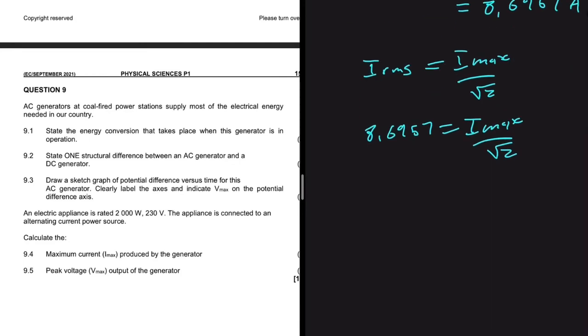Should be obvious what you're supposed to do now. Should be obvious. So I-max will be equals to... We cross-multiplying. So we have that multiplied by the square root of 2, which is equals to 12.30 amps.